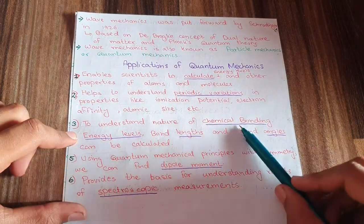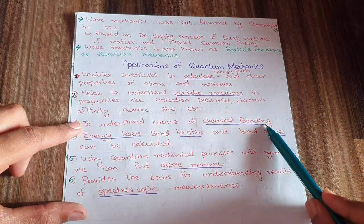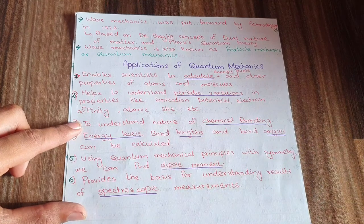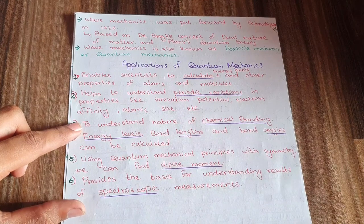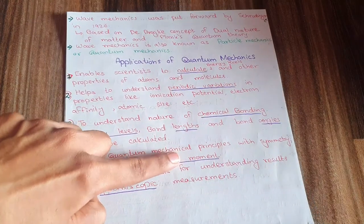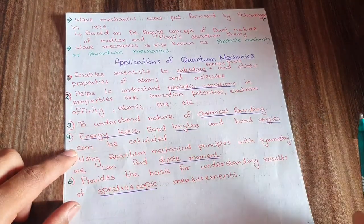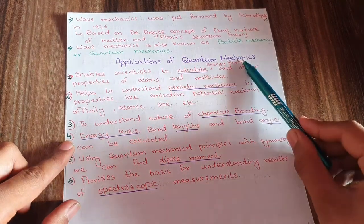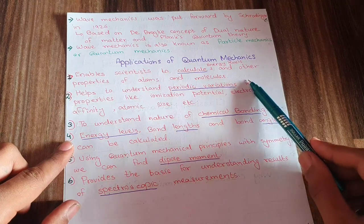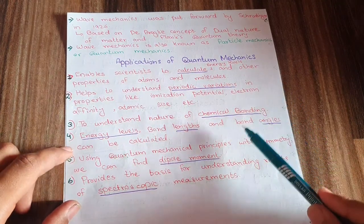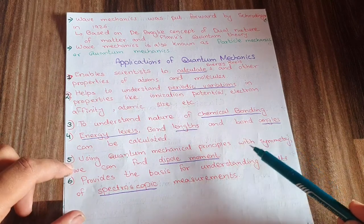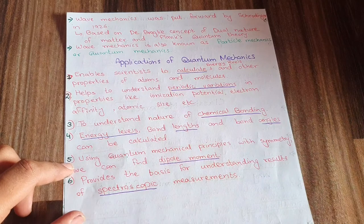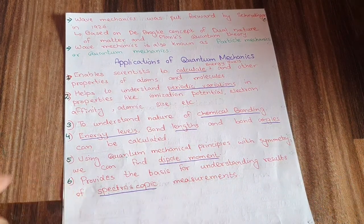Third, quantum mechanics helps understand the nature of chemical bonding — what type of bonds form and what happens at the microscopic and molecular level. Fourth, bond lengths, energy levels, and bond angles can be calculated using quantum mechanics. Fifth, dipole moments can also be found using quantum mechanical principles.